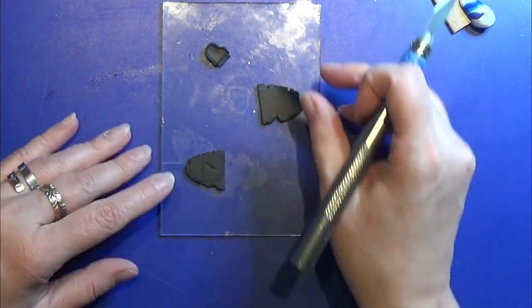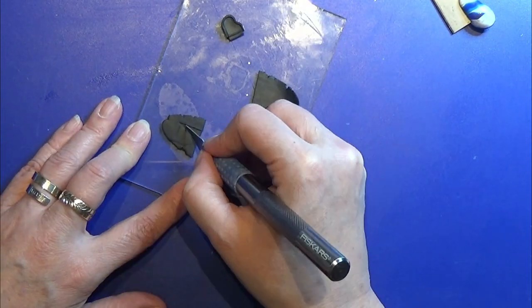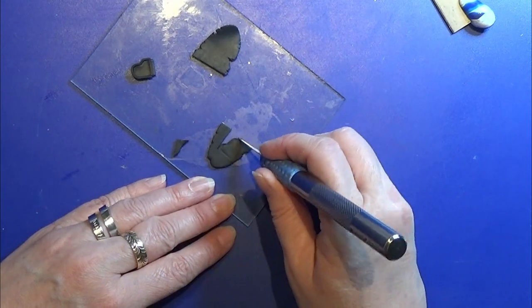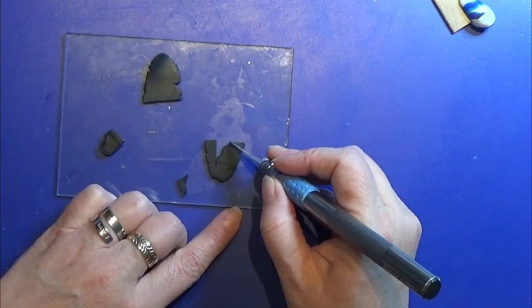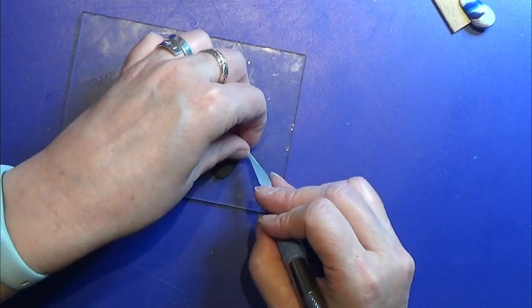After baking I rolled another piece of black clay through my pasta machine in the same thickness as the other one was. I'm going to cut out the lid for the piano.